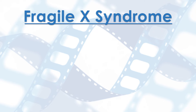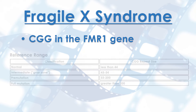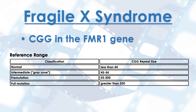One example of a trinucleotide repeat disorder is Fragile X syndrome. The trinucleotide that repeats is CGG in the FMR1 gene. In most people, the number of repeats is 44 or less, which is considered normal. If the number of repeats is greater than 200, the gene turns off, which leads to the symptoms associated with Fragile X syndrome.